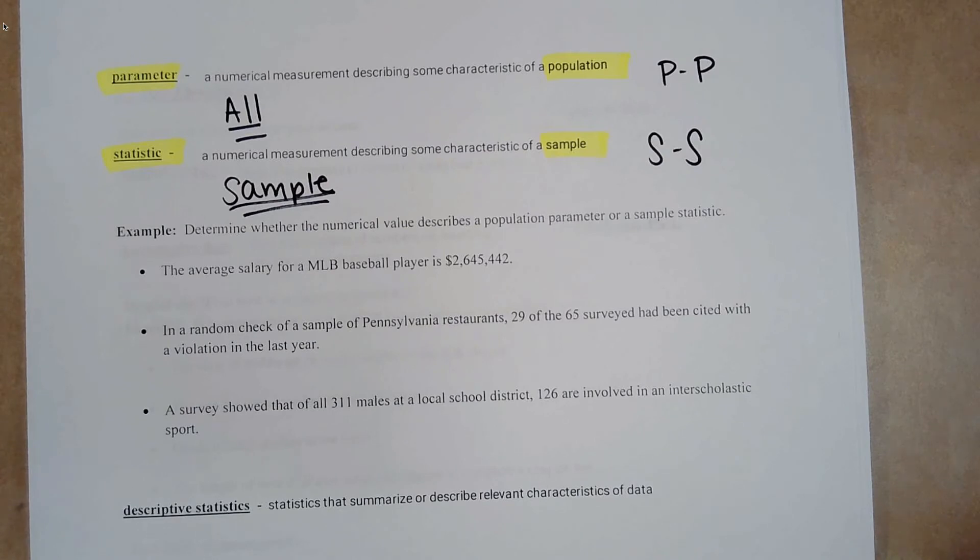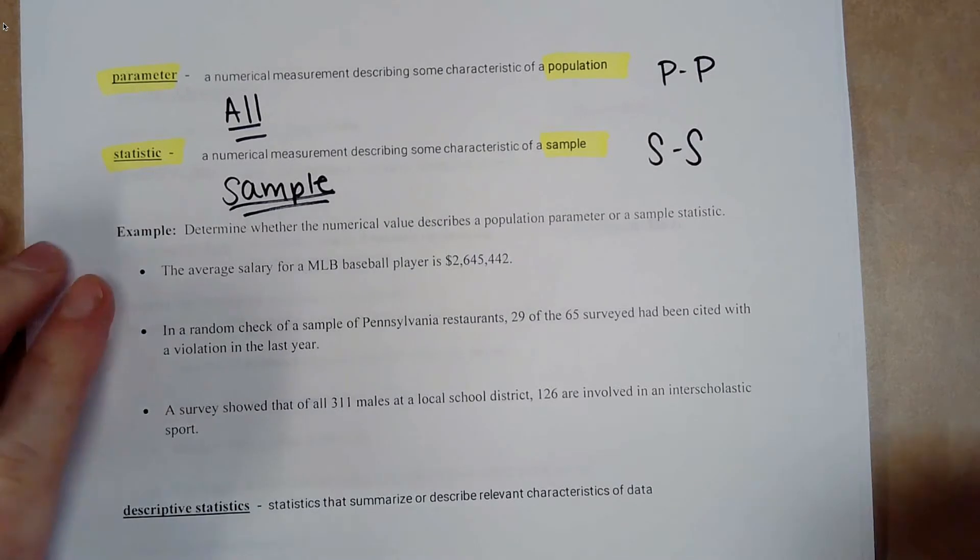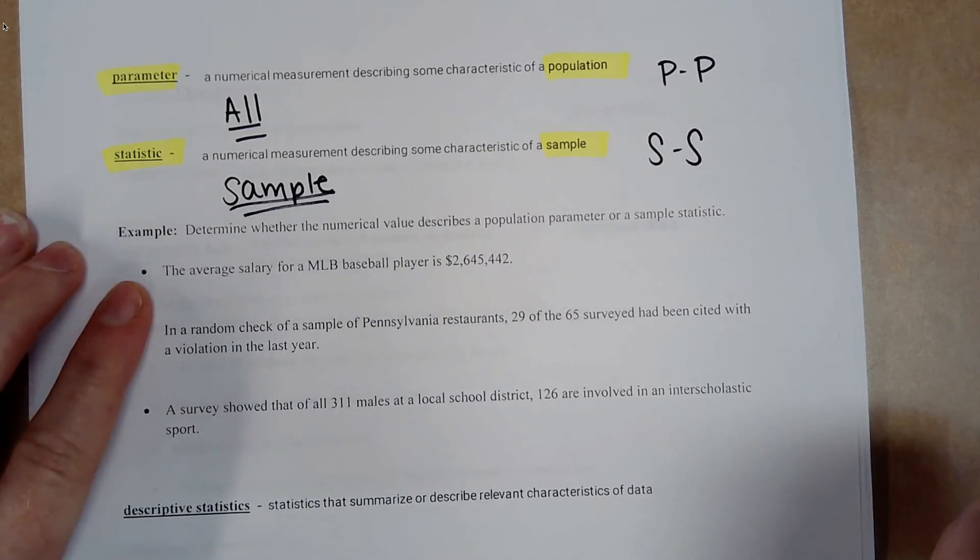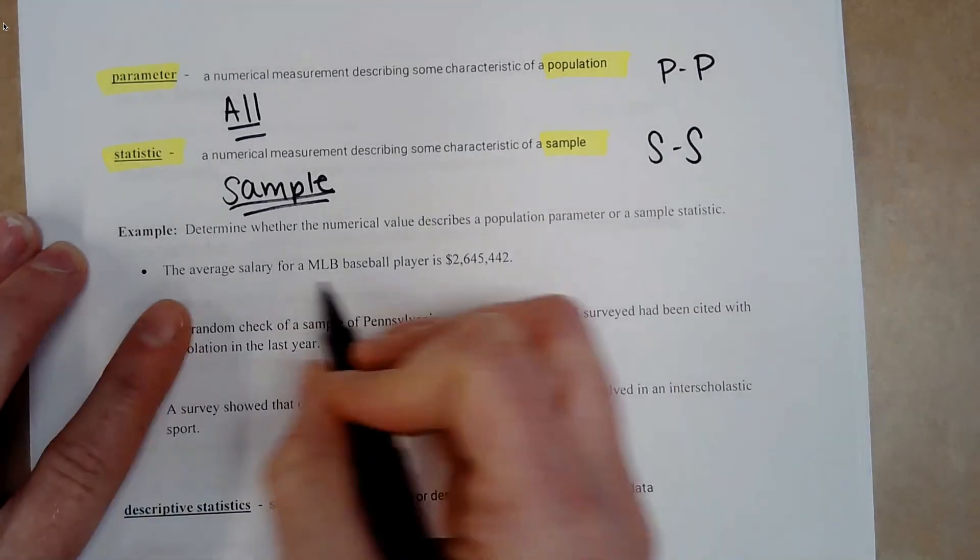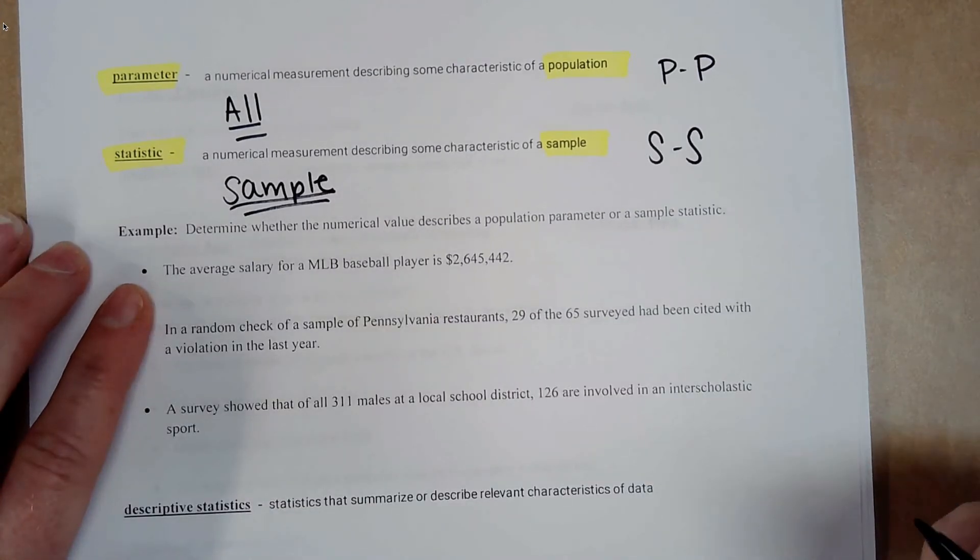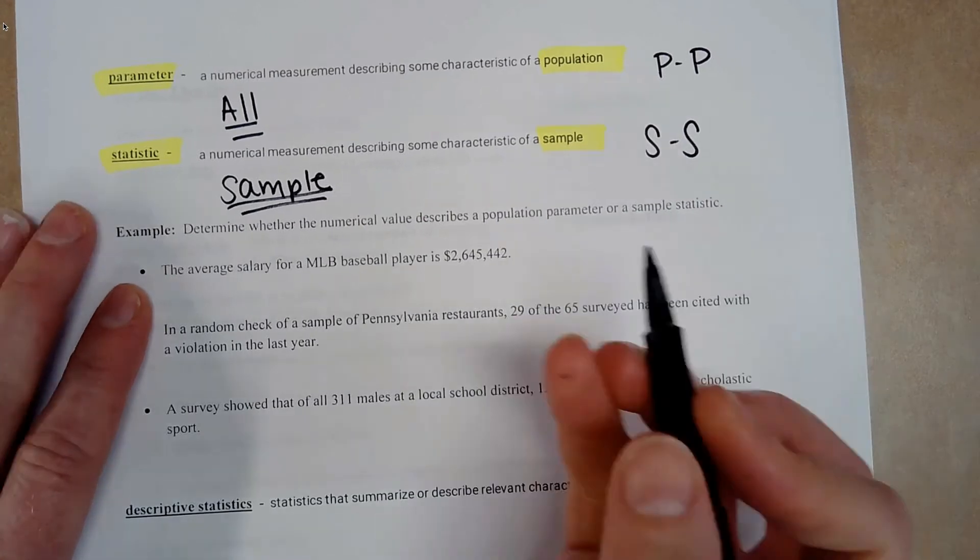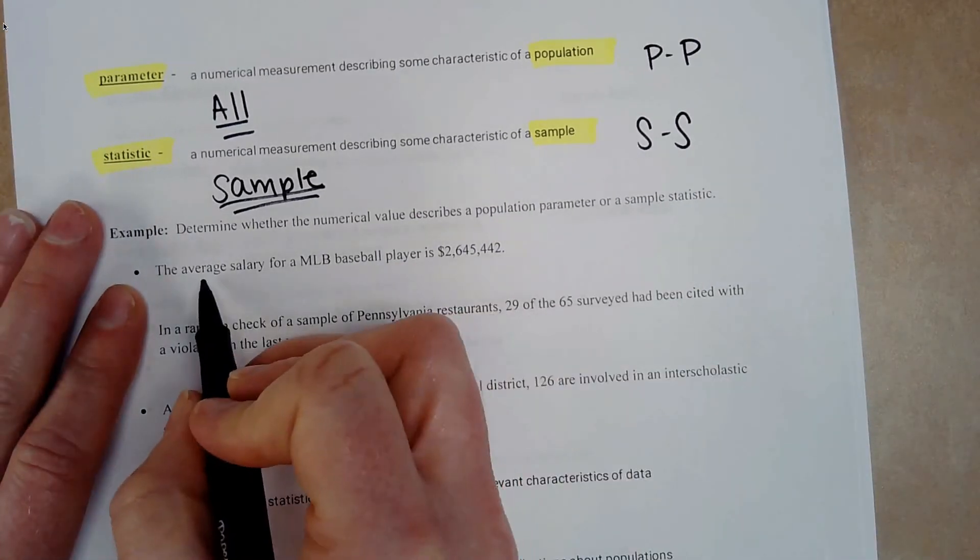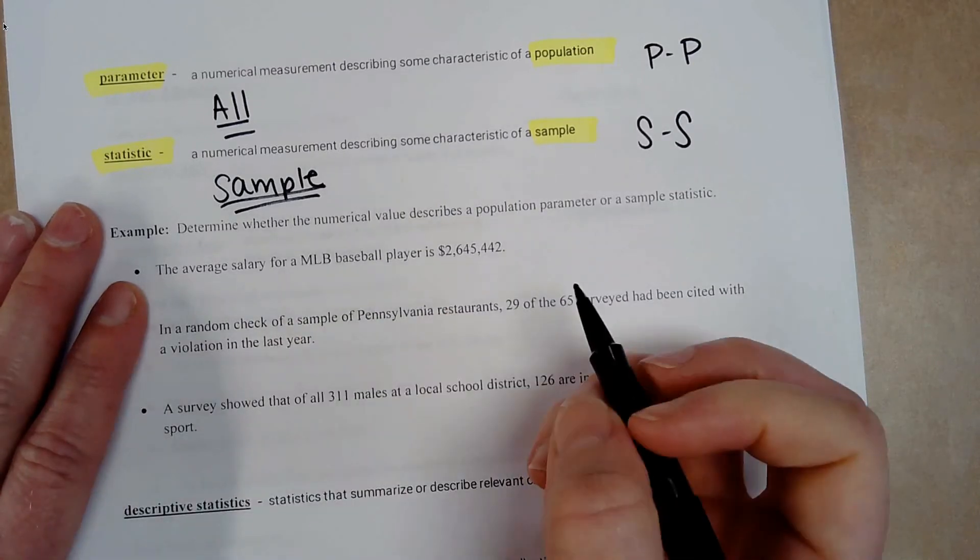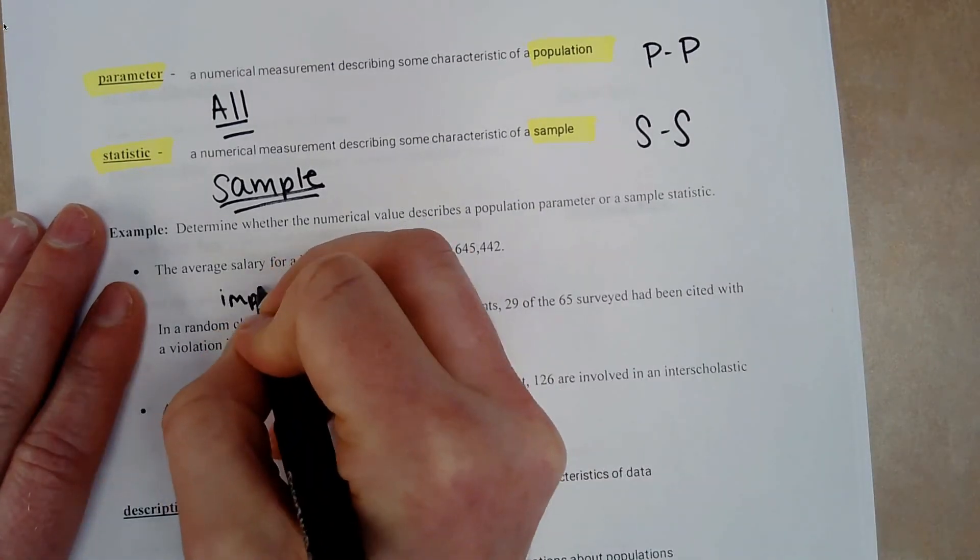Determine whether the numerical value described is a population parameter or a sample statistic. The average salary for a MLB baseball player is $2,645,442. So the average salary. So it doesn't say a sample of the baseball players.